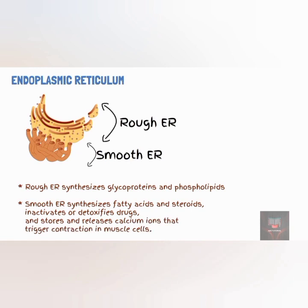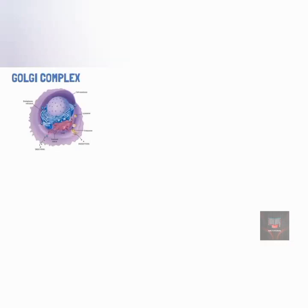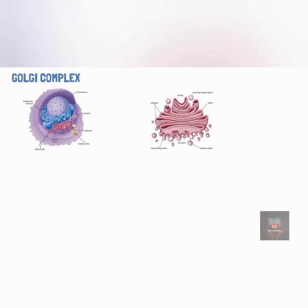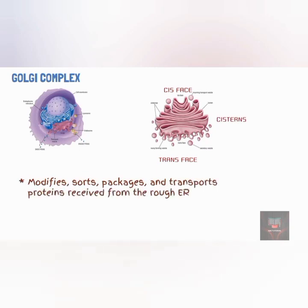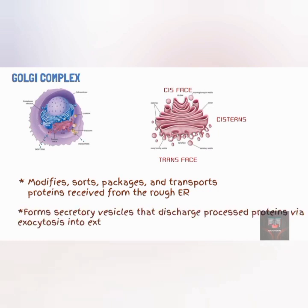Most of the proteins synthesized by ribosomes are transported to other regions of the cell through the Golgi apparatus. The Golgi apparatus has two surfaces: the entry surface (also called the cis face), which faces the endoplasmic reticulum, and the exit face (also called the trans face), which lies adjacent to the plasma membrane. The stacks in between are referred to as the medial cisternae. The Golgi apparatus modifies, sorts, packages, and transports proteins received from the rough endoplasmic reticulum, and forms secretory vesicles that discharge processed proteins via exocytosis into the extracellular fluid and to other organelles.